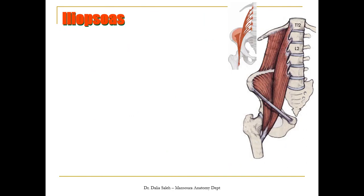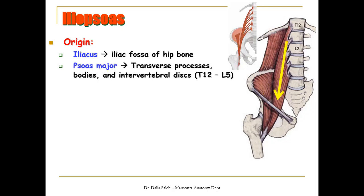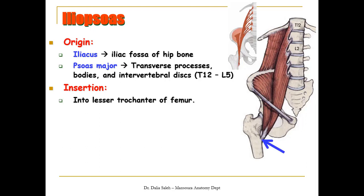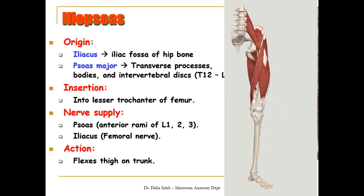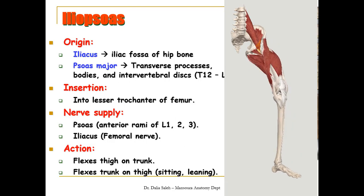The iliopsoas muscle is formed of two parts: the iliacus and the psoas major. They are found at the upper medial part of the front of the thigh. The iliacus takes origin from the iliac fossa of the hip bone, while the psoas major takes origin from the transverse processes and bodies of the last thoracic and all lumbar vertebrae and the intervening intervertebral discs. They pass downward below the inguinal ligament and insert into the lesser trochanter of the femur. The psoas major is supplied by the anterior rami of L1, L2, and L3, while the iliacus is supplied by the femoral nerve. The main action of the iliopsoas is flexion of the thigh on the trunk, or flexion of the trunk on the thigh as when sitting or leaning forward.